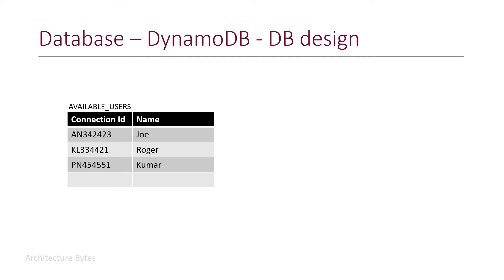We are using DynamoDB as our database and we will have a table like the following — basically a list of available users where we store connection ID and username information. In the case of connect, we insert a record. In the case of disconnect, we delete a record. And we can, of course, look up information from here.